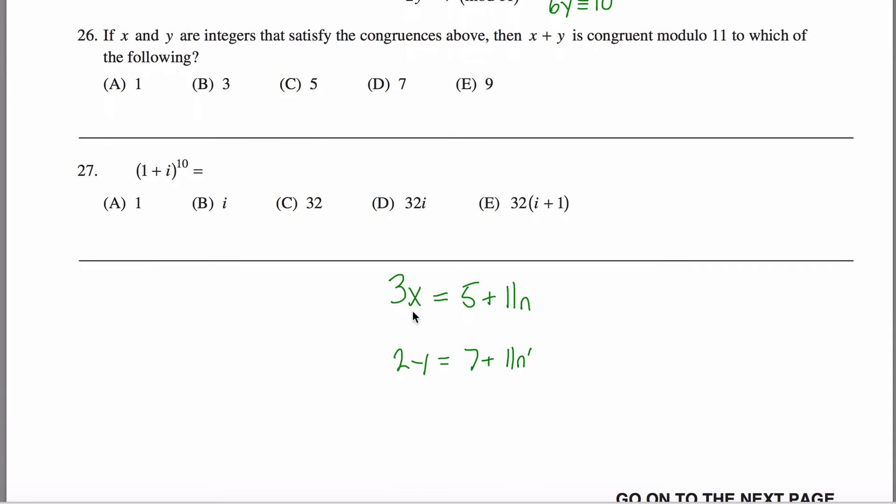First of all, why could I do that? I can do that because if you think about it, if you double both sides of this equation, you get 6x equals 10 plus 22n or 11 times 2n, but 2n is just some integer. So if 3x is equivalent to 5 mod 11, then 6x is equivalent to 10 mod 11.